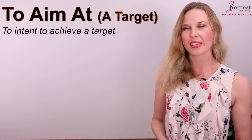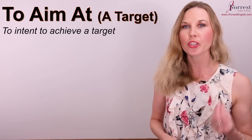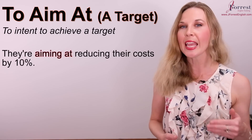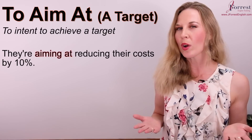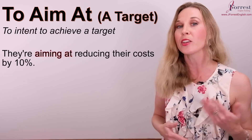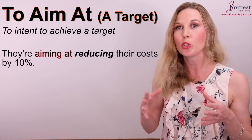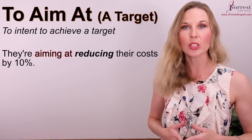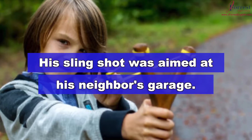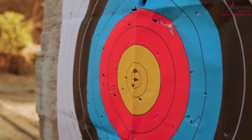Number one: to aim at a target. When you aim at a target, it means to intend to achieve that target. For example: 'They're aiming at reducing their costs by 10%.' The target is 'reducing their costs by 10%' — you can use a gerund verb with 'aim at.' You can also use a noun: 'His slingshot was aimed at his neighbor's garage' — the garage is the target he's attempting to reach.